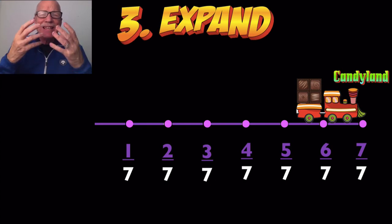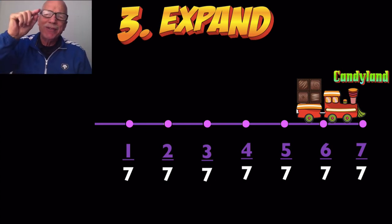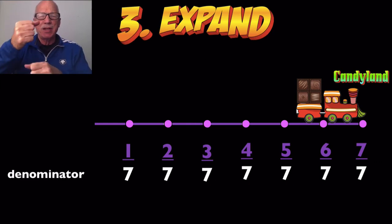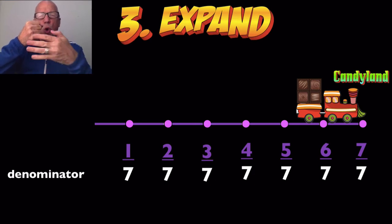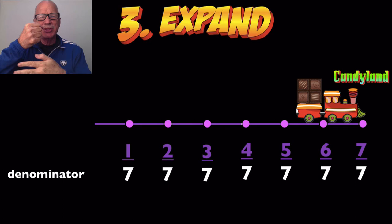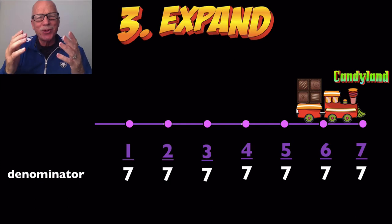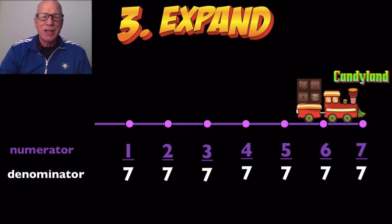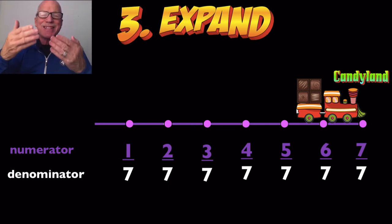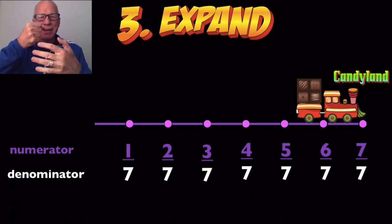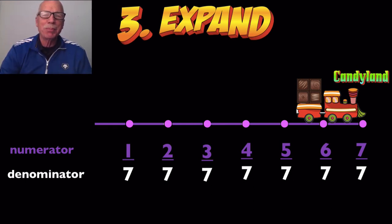There's six of seven parts and seven of seven parts. That chocolate train is teaching us about fractions before we even got to Candyland. The denominator shows the whole trip — all the sevens are the same number because it's only one trip. The numerator shows us one, two, three, four — some of the parts of the whole trip. So the denominator stayed the same for the whole trip, and the numerator changed as we went through some of the parts of the trip.